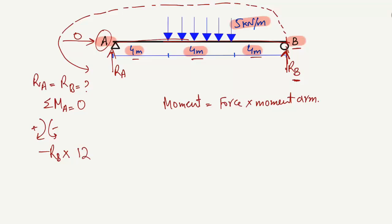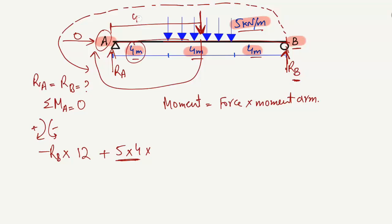The distributed load of 5 kN/m acts downward and creates a clockwise moment about point A, so it is positive. The force is 5 multiplied by 4 (the distributed length). The resultant acts at the center of the distributed load. The moment arm from that center to point A is 4 + 2 = 6 meters. So the total moment expression about A equals zero.